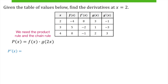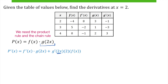So let's dive in. p prime of x equals — using the product rule, that's derivative of the first times the second plus the derivative of the second times the first. The derivative of the first is f prime of x, times the second g of 2x, plus the derivative of the second times the first. The derivative of the second is a composite function, so we take the derivative of the outside function, keep the inside the same, times the derivative of the inside. That's product rule and chain rule.